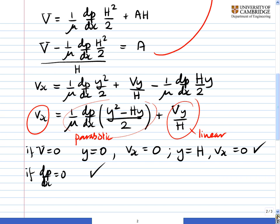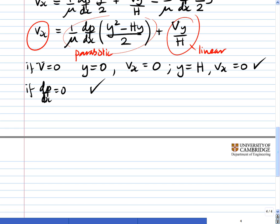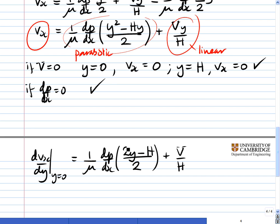Let's scroll back up and remember what the question was asking us. We're essentially being asked to find the relationship between dp/dx, V, and H which gives dvx/dy at y equals 0 equal to 0. We have an expression for vx as a function of y. We want now dvx/dy at y equal to 0. So dvx/dy is (1/μ)(dp/dx)(2y - h)/2 + V/h. Now we're looking at the case when y equals 0, so this term here goes to 0.